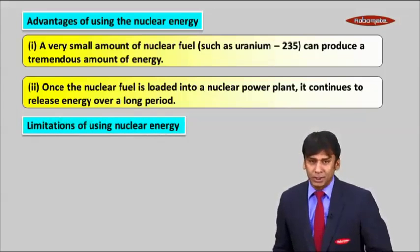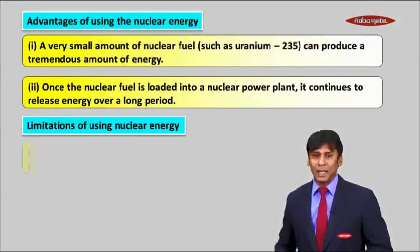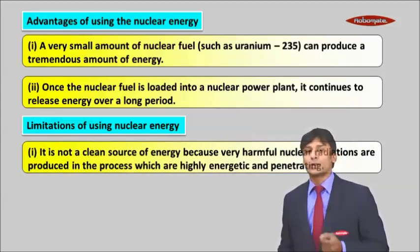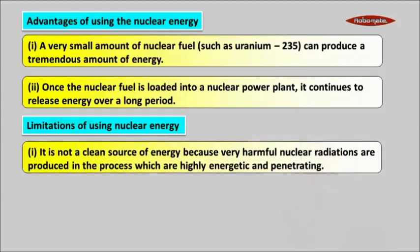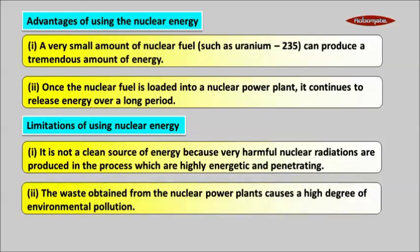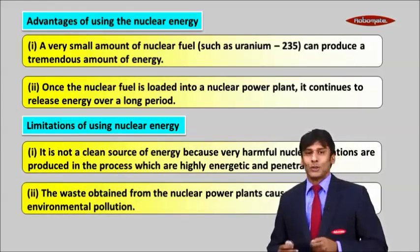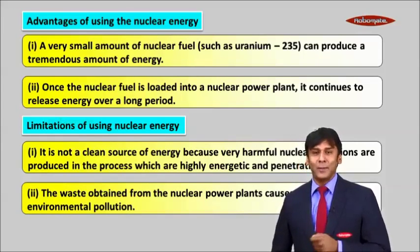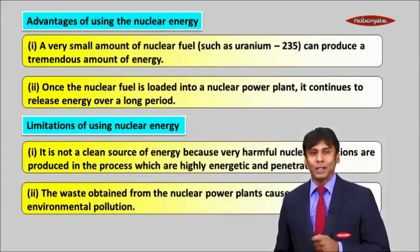Now let us see the limitations. Why don't we use this on a very large scale? The first limitation: it is not a clean source of energy because very harmful nuclear radiations are produced in the process, which are highly energetic and penetrating. The second limitation: the waste obtained from the nuclear power plant causes a high degree of environmental pollution. This was the advantages and limitations of using nuclear energy. Thank you.